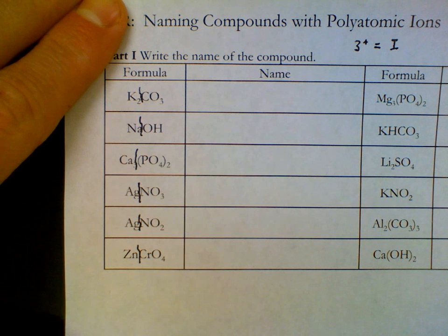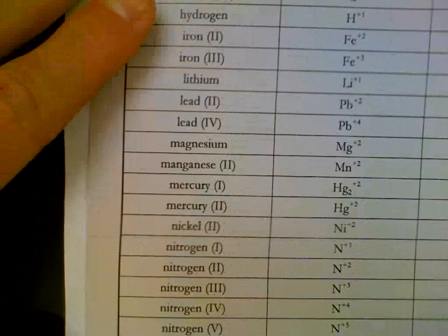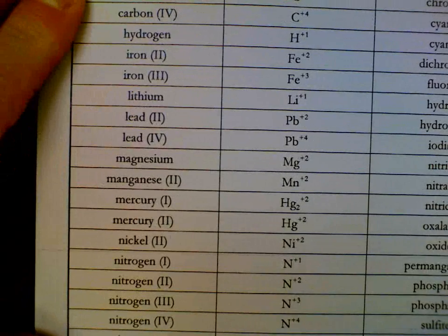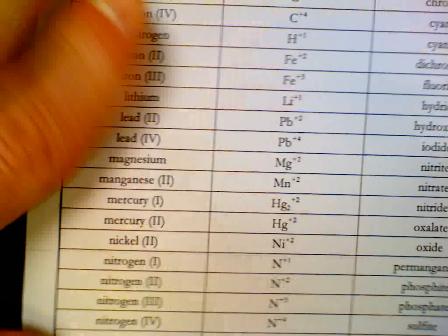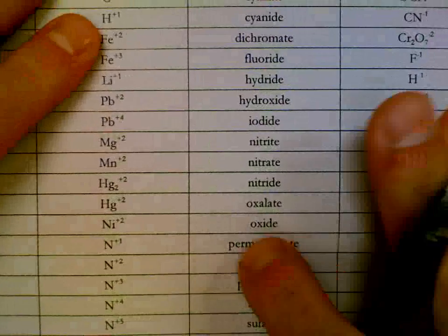If you know what these symbols are, you can just go off of memory. If you don't, you'll need to use a resource. The back of our periodic table is very helpful. On the left-hand side we have cations. On the right-hand side we have anions.